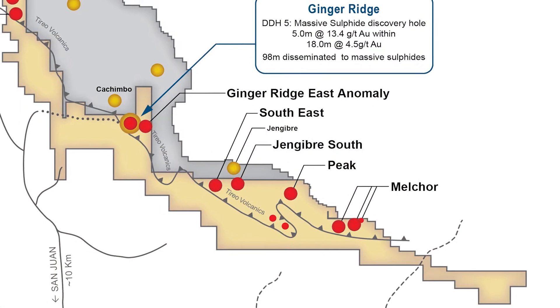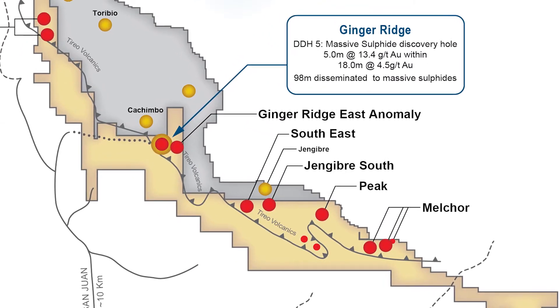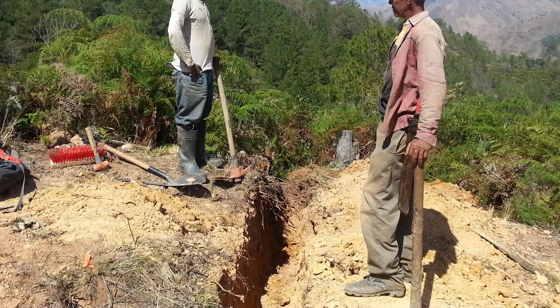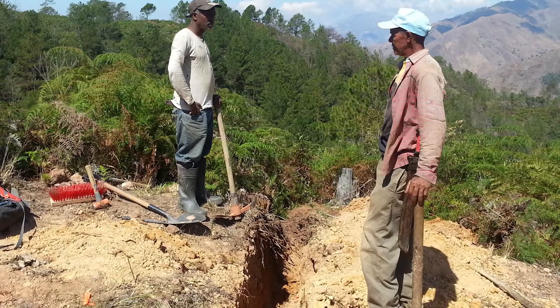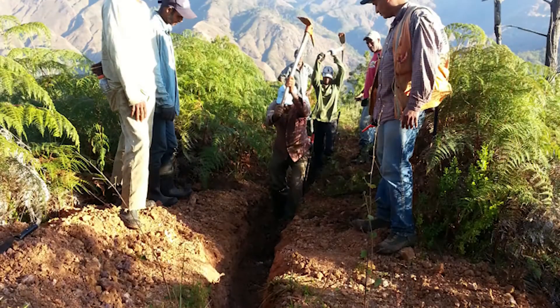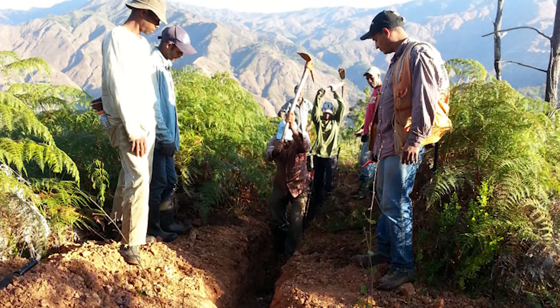We've completed four distinct trenches within the anomaly to test representative samplings throughout, and we've seen from the results reported today that the mineralization in all four trenches is not only elevated but consistent over substantial widths. This gives us the grounds to target multiple drill holes within this current drill program to be targeted within the Ginger Ridge East anomaly.